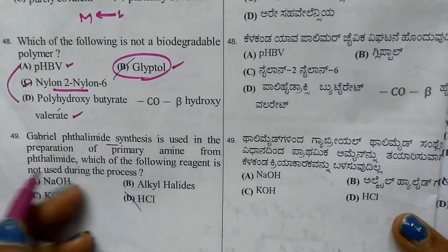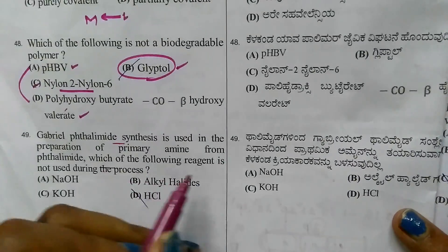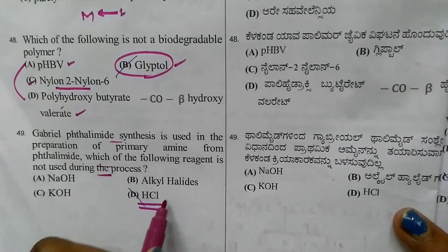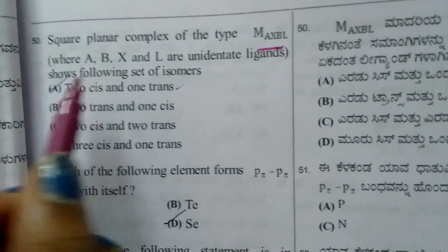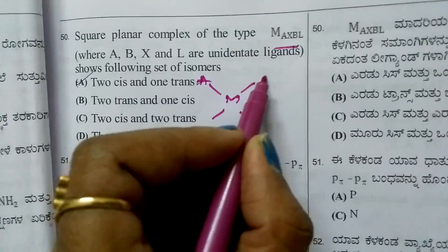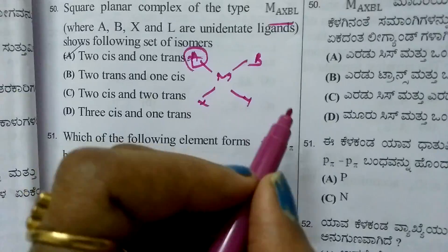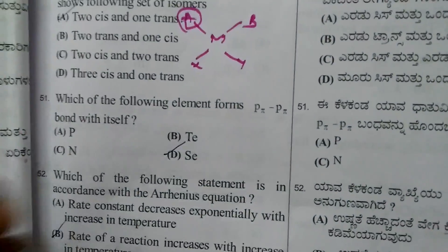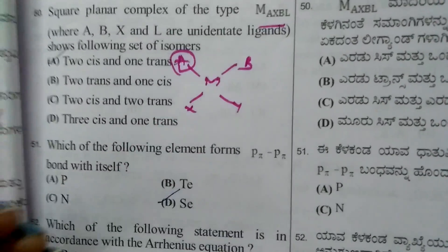Question 48: Gabriel phthalimide synthesis prepares primary amines from phthalimide. Which reagent is not used? HCl is not used. Question 49: Square planar complex M-A-X-B-L. With four ligands A, B, X, L, fix one position and change three positions to get three more structures. Out of four, two are identical and two are cis-trans isomers. First option.